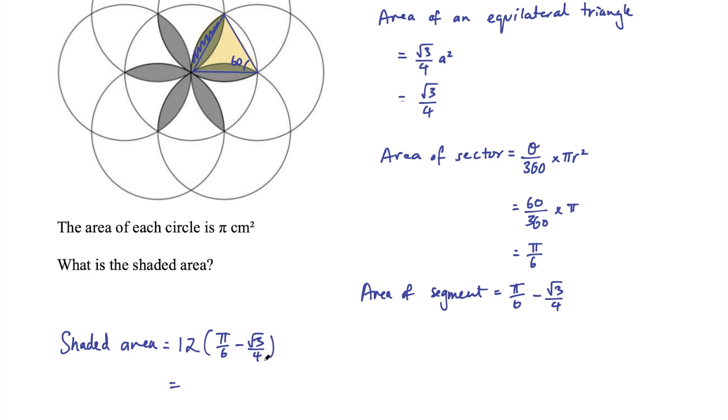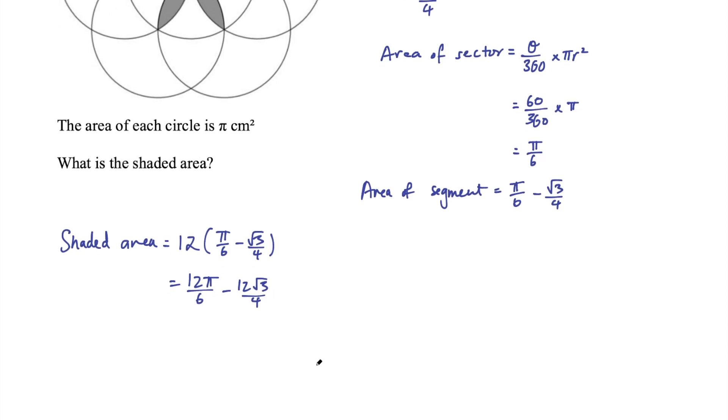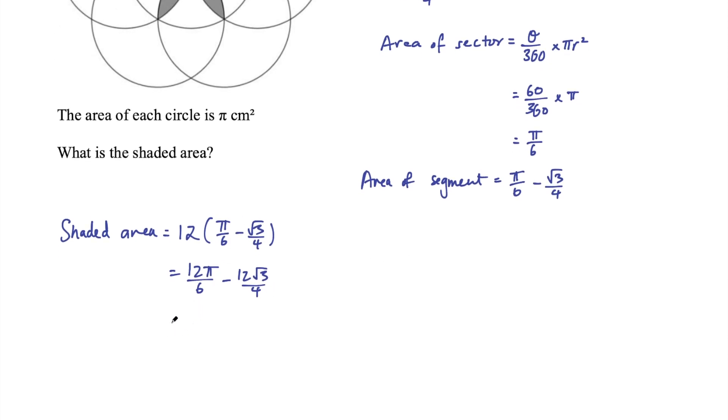If I expand out these brackets, it would be 12π/6 - 12√3/4, and then we can divide 12 by 6—that would be 2π. 12 divided by 4 is 3√3 centimeters squared, and you could leave your final answer as that or you could find a decimal approximation as well.